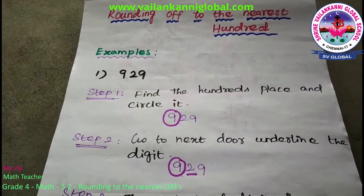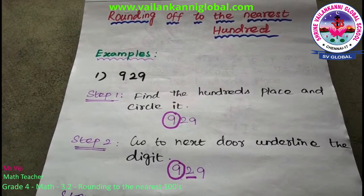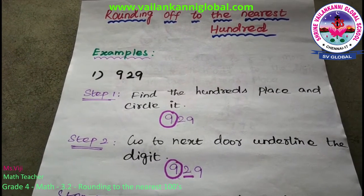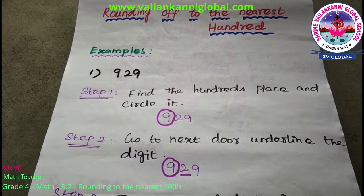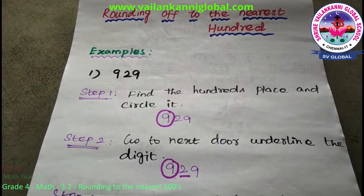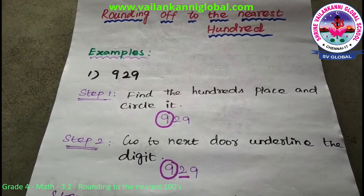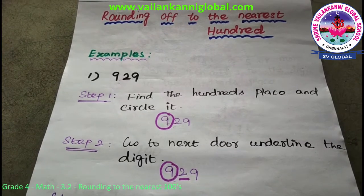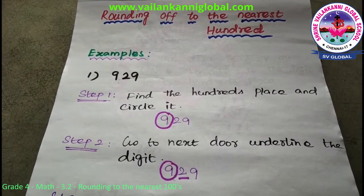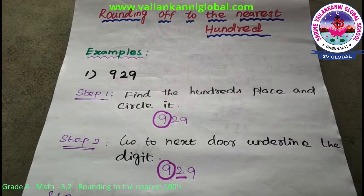Hi students, today we are going to discuss the topic of rounding off to the nearest hundred. We will look at some example problems related to this. To find out rounding off to the nearest hundred, we are going to use 3-digit as well as 4-digit numbers.